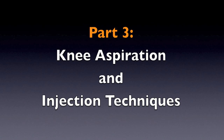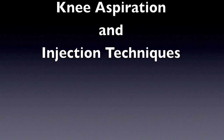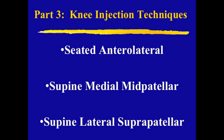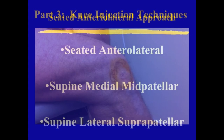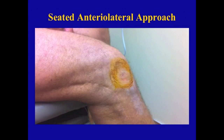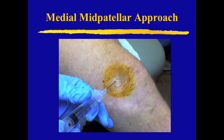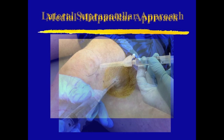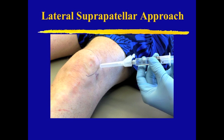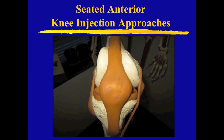Now in part 3 we will discuss the aspiration and injection techniques for three of the anatomical approaches. In this video we'll walk through the anatomical landmarks and injection techniques for three positions: the seated anterolateral approach, the supine medial mid-patellar approach, and the supine lateral suprapatellar approach. We'll start with the seated knee approaches.